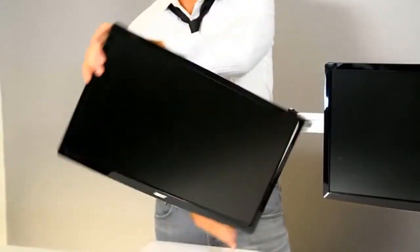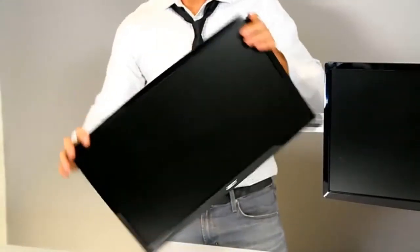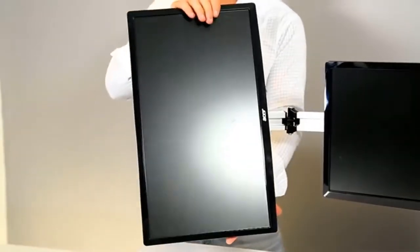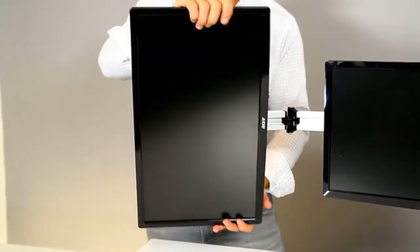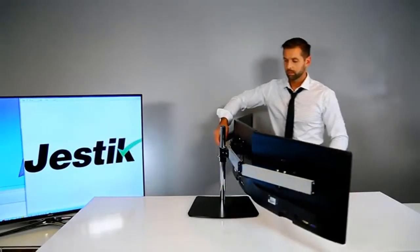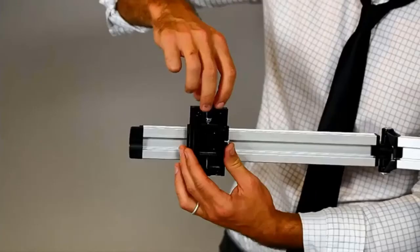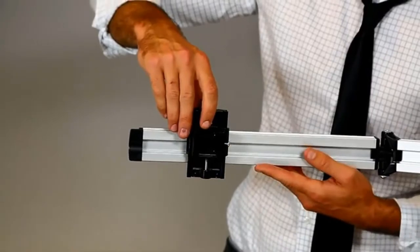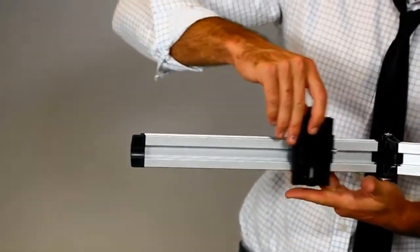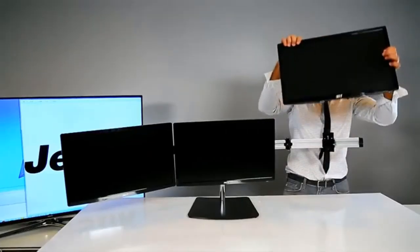When all monitors are installed, you can play around with your setup. Each monitor can go from portrait mode to landscape. You also can tilt and pan your monitors. If you find your monitors are not aligned properly, you can use the micro height adjustment on each of the mounts.